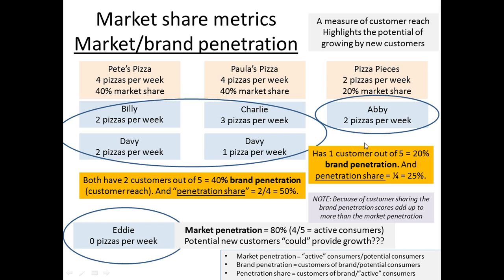From that information we can construct a number of metrics. The first one is brand penetration — how many customers can we reach? There are five potential customers in the market. The first store has reached two of them, the second store also two, and the third store has only reached one. So these two stores both have 40% brand penetration, and this one has 20% brand penetration.